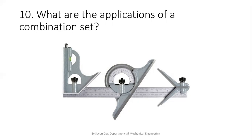Another use of the combination set is that it can be used as a depth gauge to measure depth. It can also be used to measure and mark angles, similar to a protractor. And another use is for marking miters — that means for 45-degree angles. If we want to measure 45 degrees, we can definitely use this combination set.